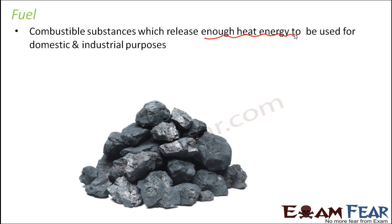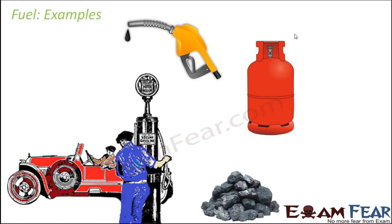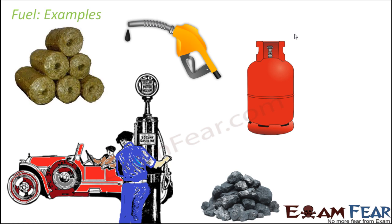Let us look at some examples of fuel: coal, petroleum (petrol and diesel), LPG which is put inside your cylinder and generates sufficient heat energy for domestic cooking, natural gas, and biogas or cow dung cakes. In villages and rural areas, cow dung cakes are used to prepare food. However, there are disadvantages — they produce a lot of pollution and smoke, which is harmful to health. But they are still considered fuels because they generate a lot of energy.